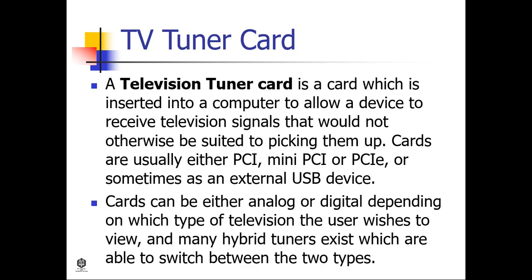Let's proceed to the TV tuner card. A television tuner card is a card which is inserted into a computer to allow a device to receive television signals that would not otherwise be suited to picking them up. Cards are usually either PCI, mini-PCI, or PCIe, or sometimes an external USB device. Most cards have an inbuilt processor to free up space from the system's CPU and ease the pressure on the computer. Cards can be either analog or digital depending on which type of television the user wishes to view, and many hybrid tuners exist which are able to switch between the two types. High-end tuner cards often include a special chip to encode and decode the data being transmitted.